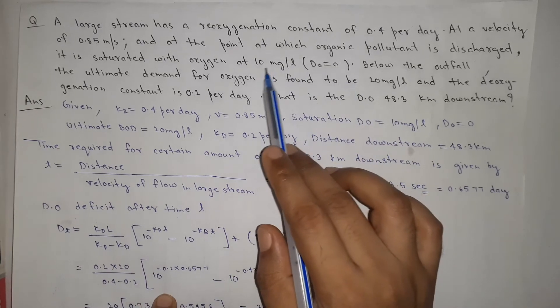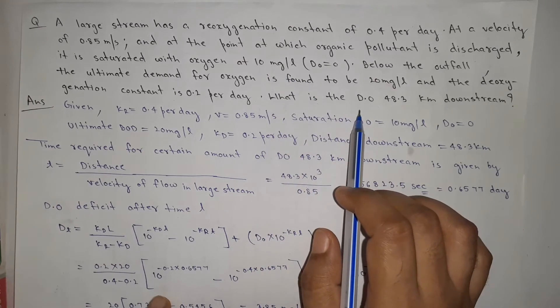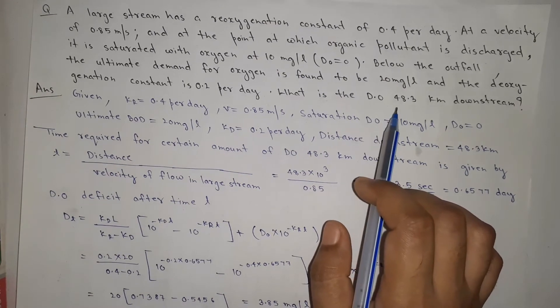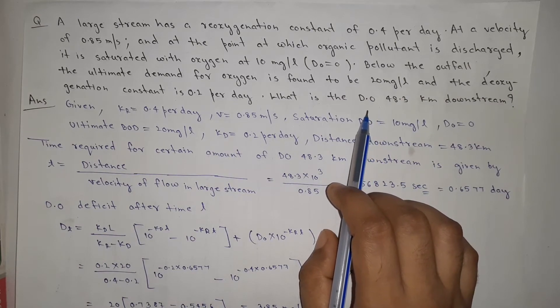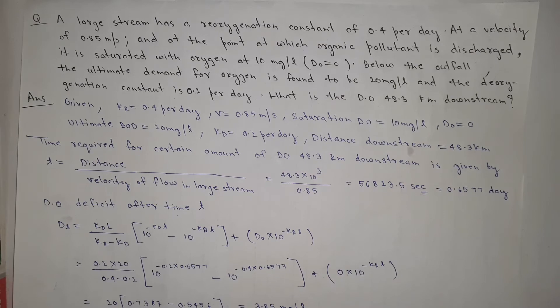Initially it is 10 mg, but when we travel so much distance, what will be the dissolved oxygen? Before solving the question, let's look at some theory.